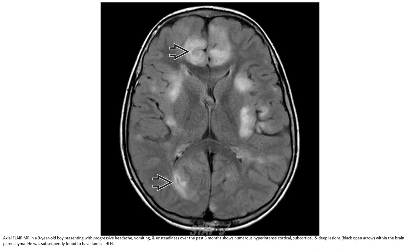Axial FLAIR imaging in a nine-year-old boy presenting with progressive headache, vomiting, and unsteadiness over the past three months shows a number of T2-hyperintense cortical, subcortical, and deep lesions within the brain. He was subsequently found to have familial HLH.